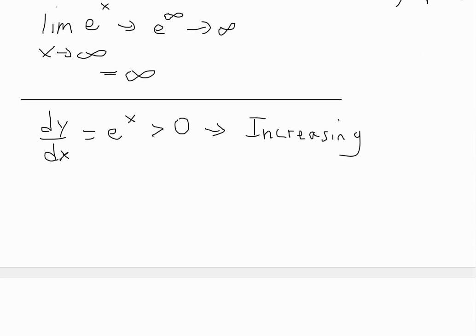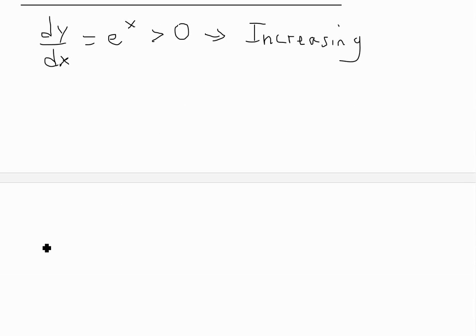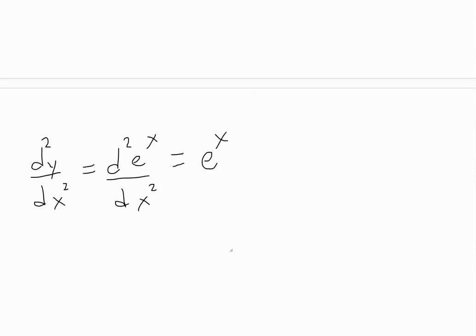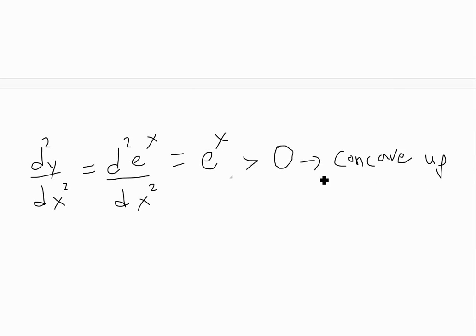Now that we know it's increasing, we could check the concavity — whether it's concave up or down — using the second derivative test. We take the second derivative: d²y/dx², which is the same as the second derivative of e to the x. We know the first derivative is e to the x, so taking the derivative of that is again e to the x. This is greater than zero everywhere; the function is never less than zero, so it's concave up at all values of x — always concave up.